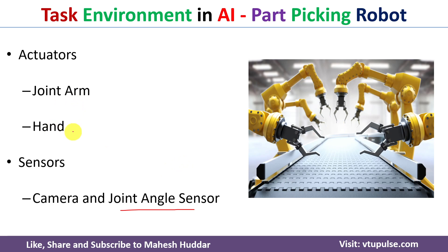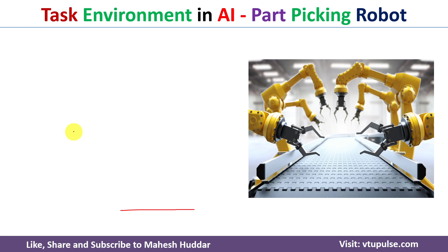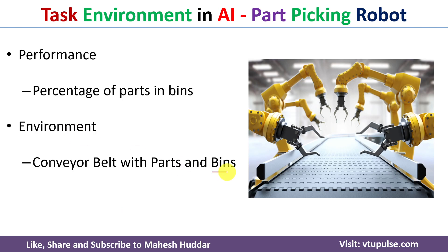To summarize: cameras and joint angle sensors allow the robot to see and identify parts. The joint arm and hand place the parts into different bins. The belt continuously moves, bringing parts forward, and the performance measure is how many parts were correctly placed. This is how we define the task environment in AI for a part picking robot.